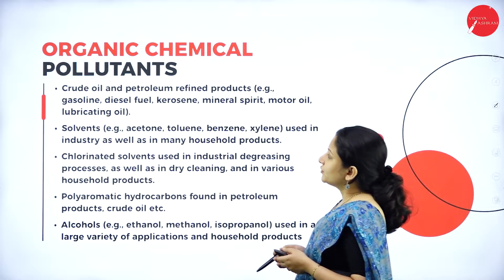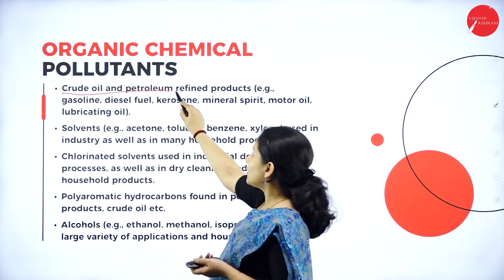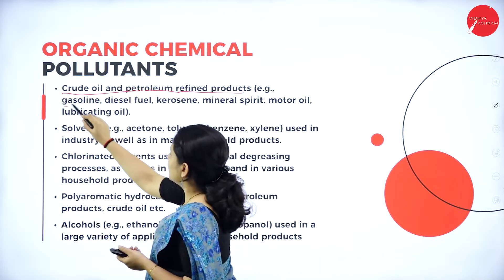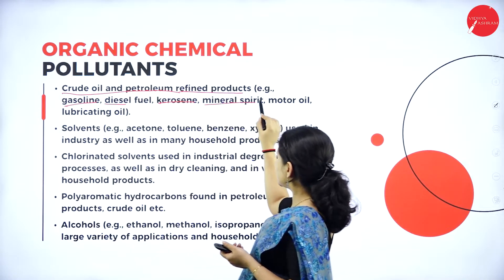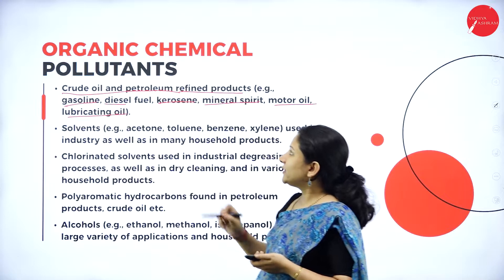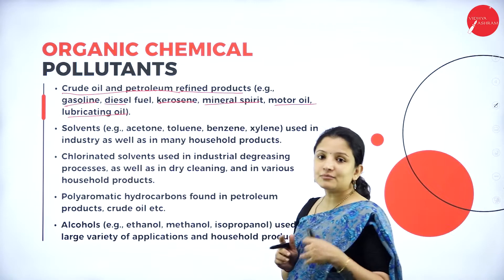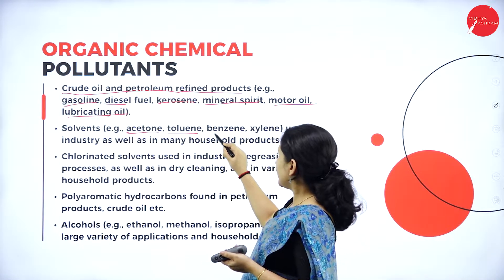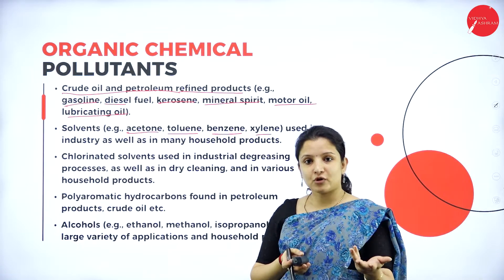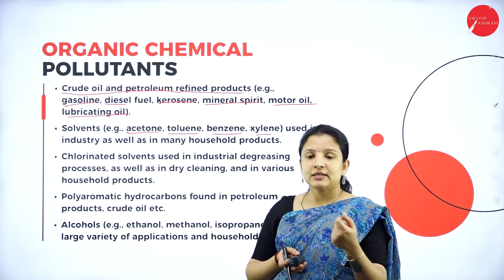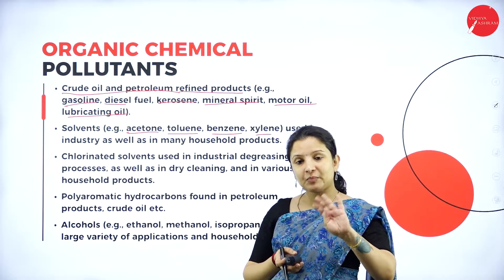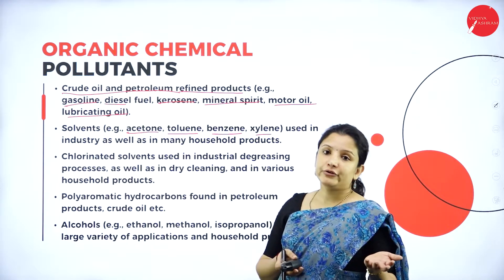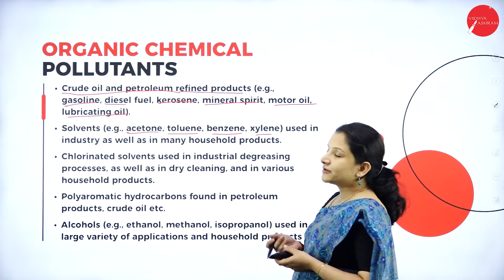Talking about organic chemical pollutants: crude oil and petroleum are organic and naturally obtained from the earth. Refined petroleum products such as gasoline, diesel, kerosene, mineral spirit, motor oil, and lubricating oil are organic chemical pollutants that can cause chemical pollution. Next, some solvents used in industries or laboratories such as acetone, toluene, benzene, and xylene are used in many household products — for example, acetone is a major component of nail polish removers — and these solvents can also cause chemical pollution.